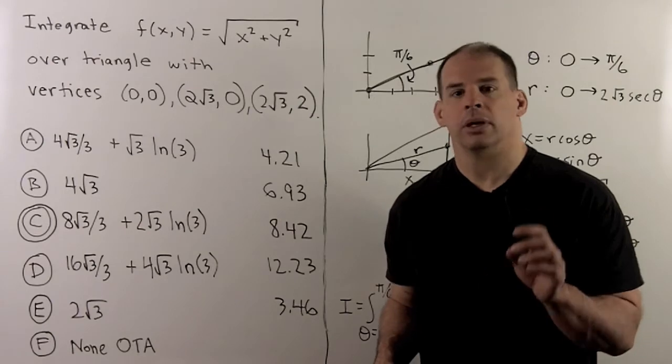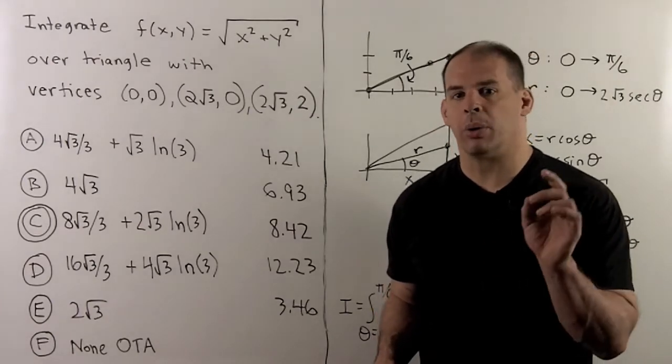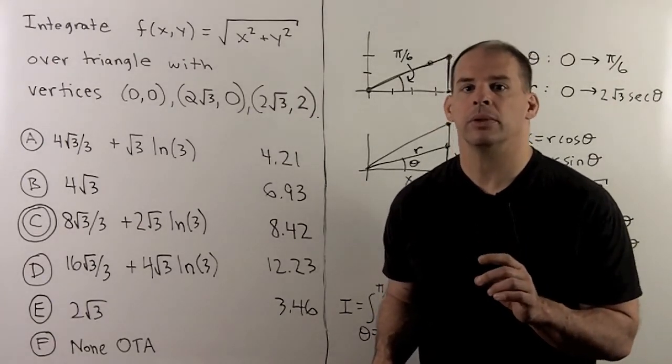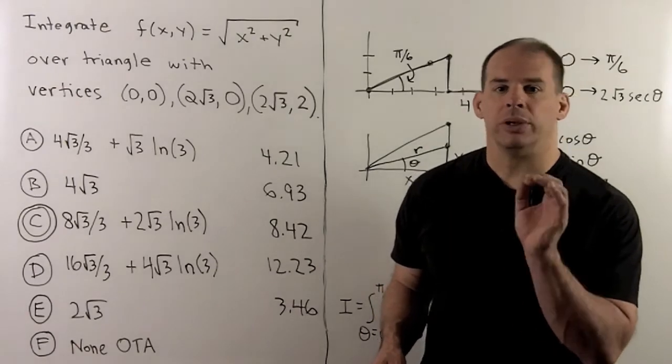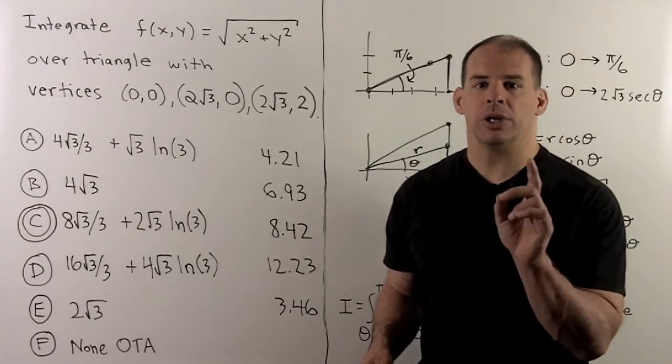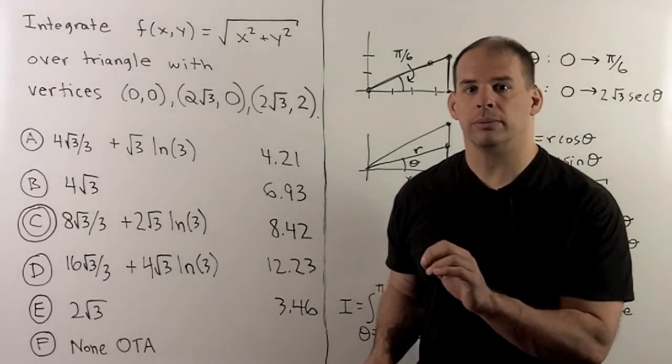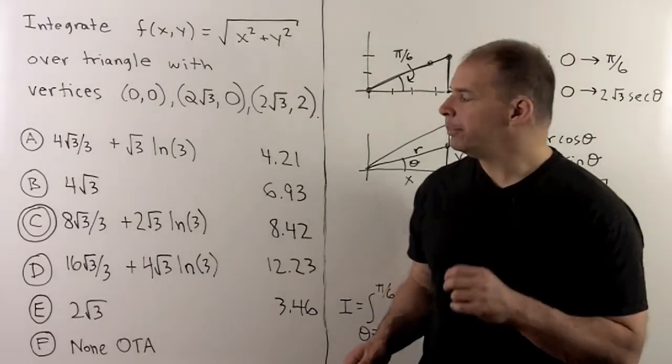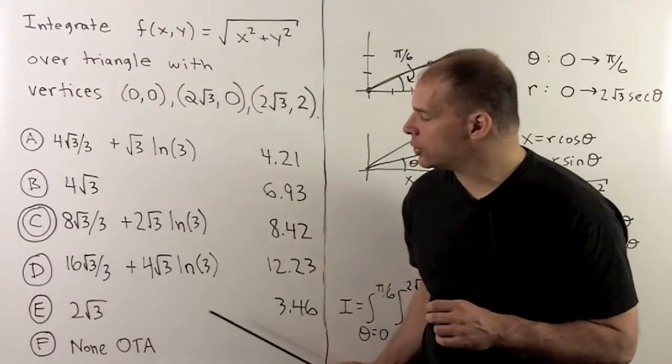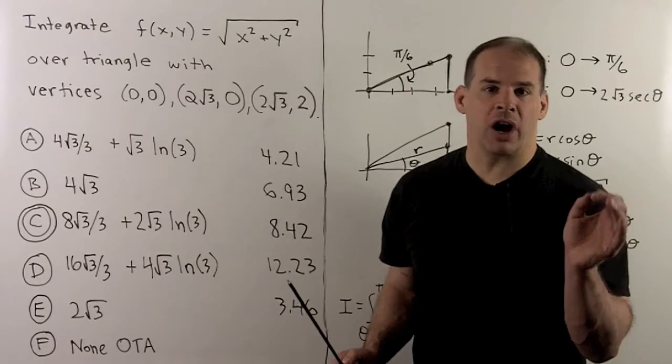Our problem here, we're given a multiple choice question on polar integrals. When we do the work, we'll need to integrate sec cubed theta, which is not a straightforward integral. Instead, because we're given a list of possible values, we'll approximate to get our answer.